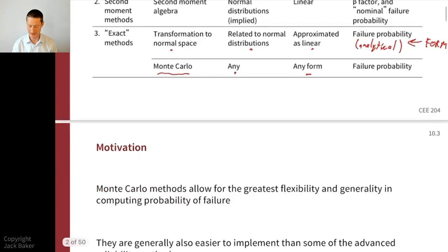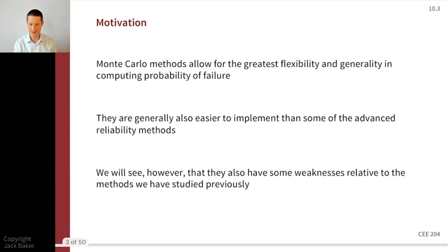This is a very flexible approach with a lot of generality — no approximations needed for the limit state function. It's also pretty easy to implement. The one trick is we have to sample from a target distribution, but once we've generated those samples, the rest of the work is straightforward. The drawbacks are that we may need a lot of samples, especially depending on which Monte Carlo approach we take, and if the limit state function is expensive to evaluate, that's problematic. The answer also has some uncertainty around the finite samples we take, which we can quantify.